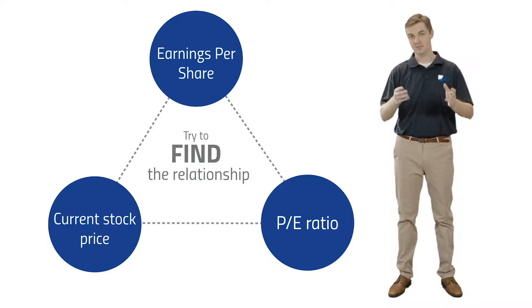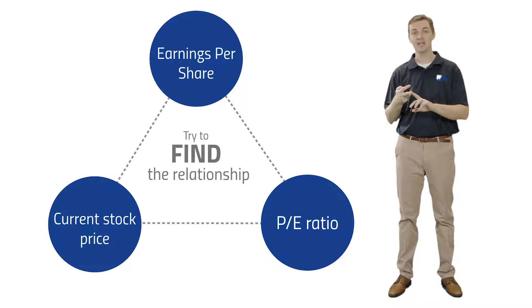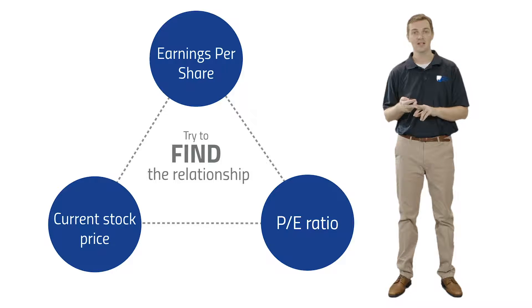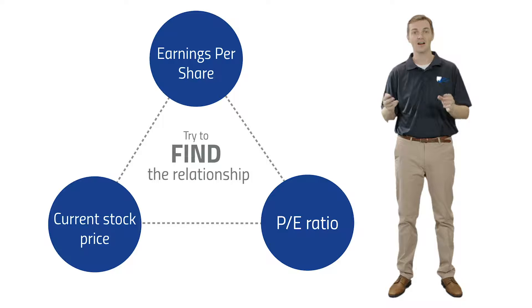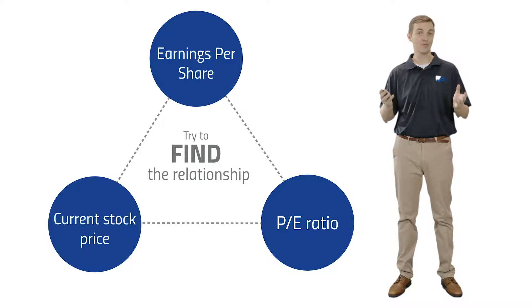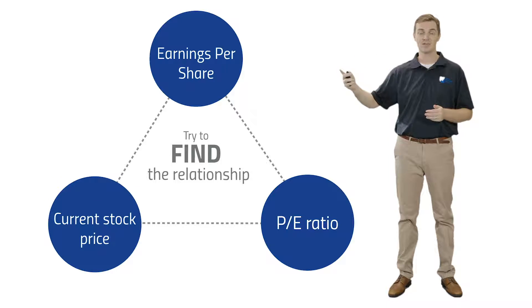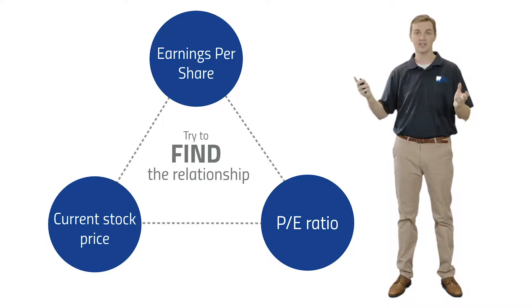Let's say you find a stock trading at $10 a share, and the EPS, or earnings per share, is $1 per share, and the P/E ratio is 10x, or 10 times. The formula is pretty simple: price per share divided by earnings per share — so $10 divided by $1 equals 10x.